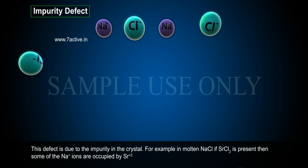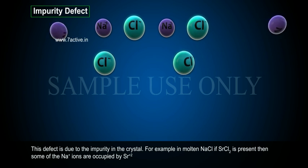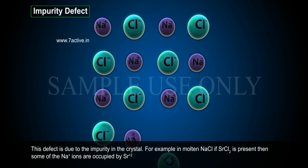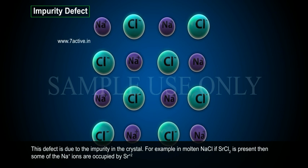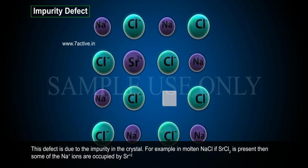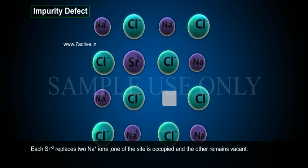Impurity defect: This defect is due to the impurity in the crystal. For example, in molten NaCl, if SrCl2 is present, then some of the Na+ ions are occupied by Sr2+. Each Sr2+ replaces two Na+ ions. One of the sites is occupied and the other remains vacant.